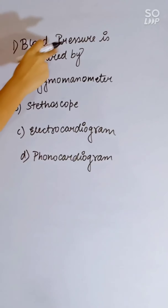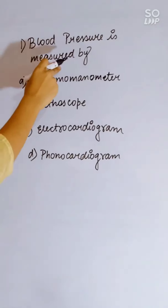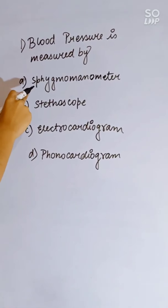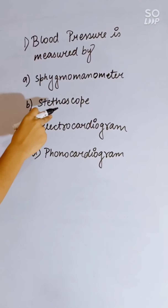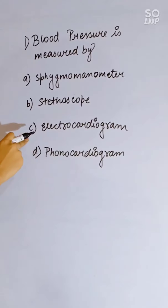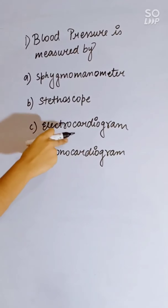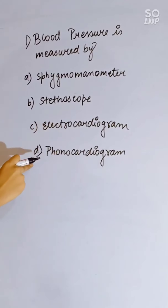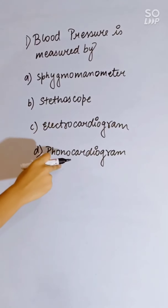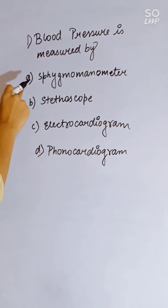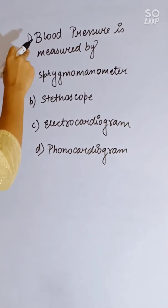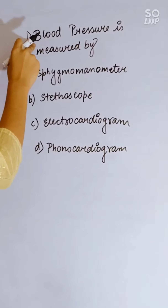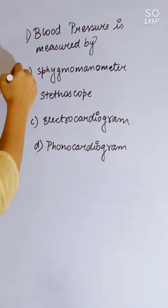Blood pressure is measured by: sphygmomanometer, stethoscope, electrocardiogram, or phonocardiogram. The sphygmomanometer is the instrument used to measure blood pressure. Correct answer is sphygmomanometer.